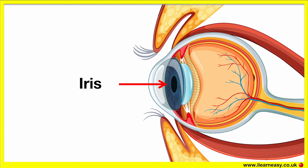The iris is the coloured part of the eye. It's a thin circular structure that controls how much light enters the eye. The iris is made up of muscles that contract and relax in order to control how much light will enter the eye. The light rays pass to the pupil, which is a black hole that appears at the centre of the iris.